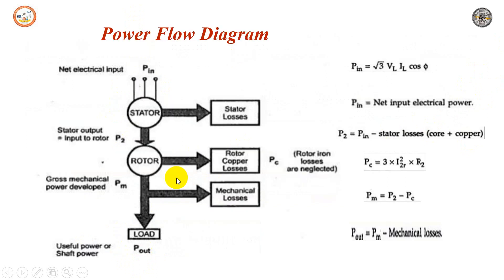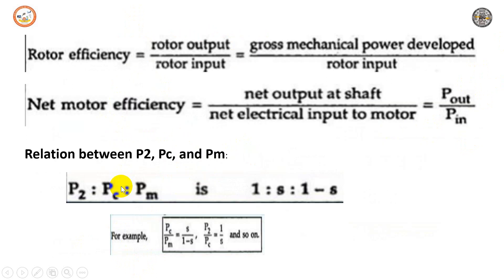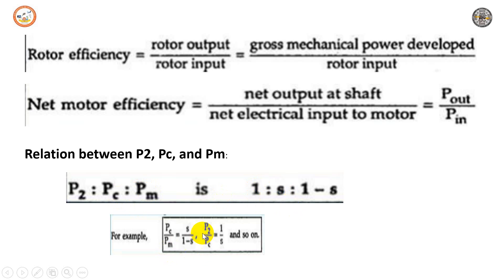There is an important relation between P2, Pc, and PM. After derivation, the relation is P2 : Pc : PM = 1 : S : (1 − S), where S is the slip. For example, P2 / Pc = 1 / S, and Pc / PM = S / (1 − S). This is how we use these ratios to calculate any power in the power flow diagram.